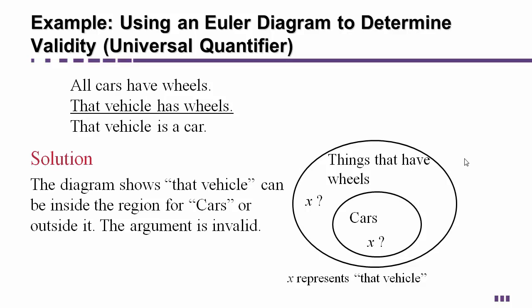Things that have wheels inside that are cars because all cars have wheels so the car circle has to be inside the wheel circle. That vehicle has wheels. If that vehicle has wheels it is anywhere inside the wheel circle. It could be out here but it could be inside the car circle. You see how it could live in both of those places and still make that statement true.